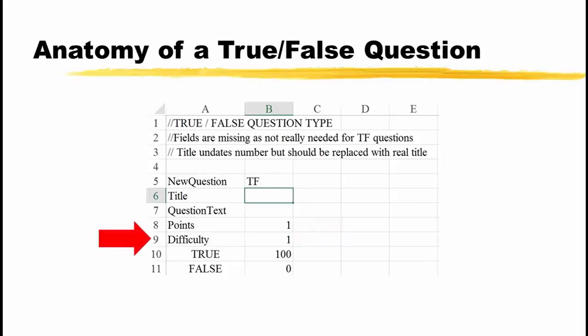Cell A9 contains the word Difficulty, and cell B9 contains a difficulty level of one. D2L also handles difficulty inconsistently, so I typically leave the value at one.